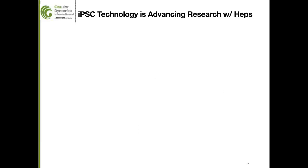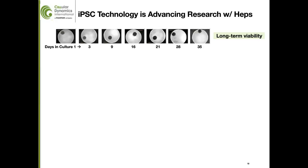Reproducing all or even most of the functions of the gold standard primary human hepatocyte is a major hurdle that none of the current protocols have achieved. However, there are clear wins with respect to long-term viability in culture. In 2D, there's no need for Matrigel overlays or collagen sandwich cultures, and cells regularly last at least two weeks. Using a 3D spheroid protocol developed recently, we can keep cells out to four or five weeks, making them suitable for long-term toxicity studies with repeat dosing.